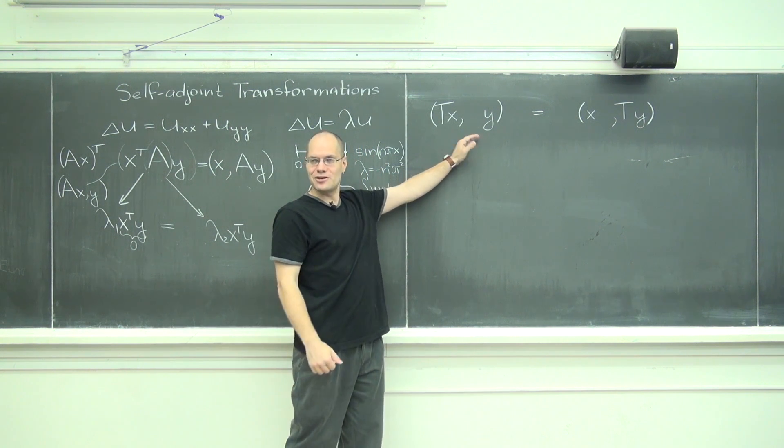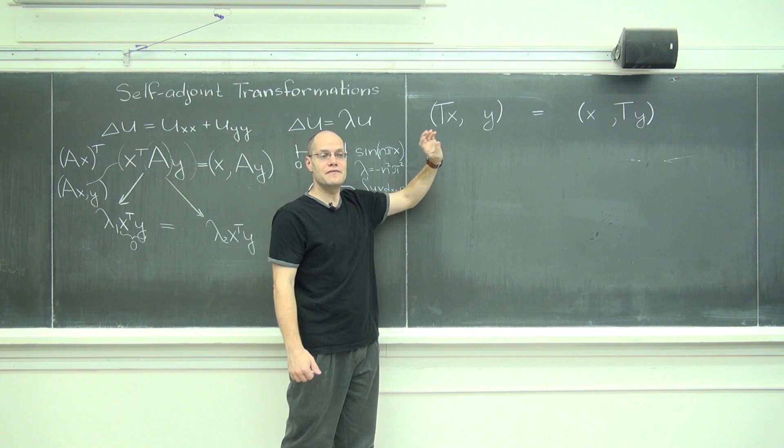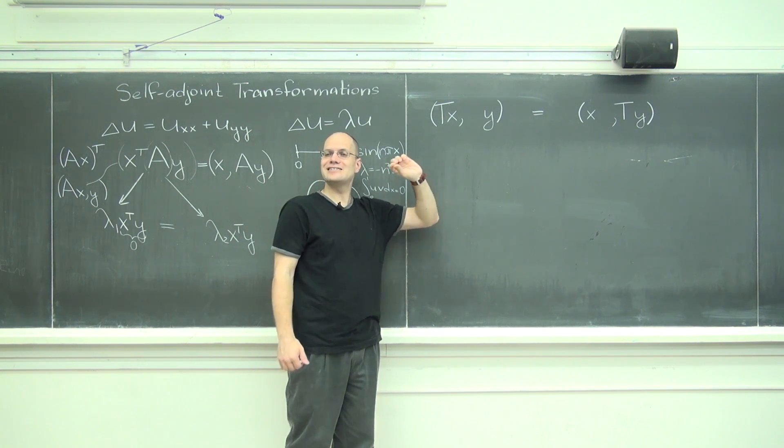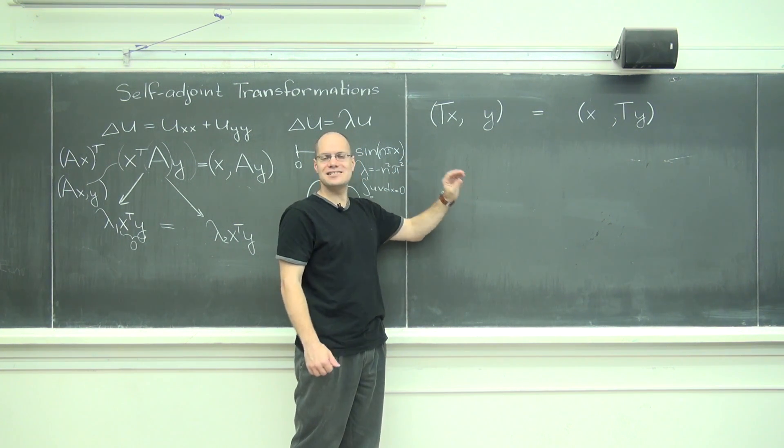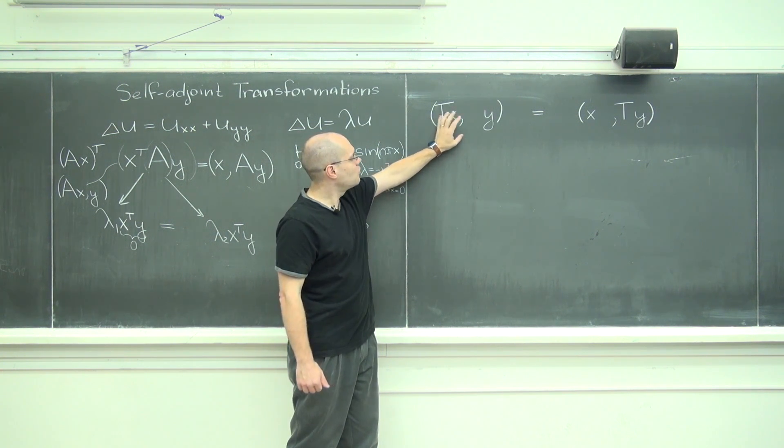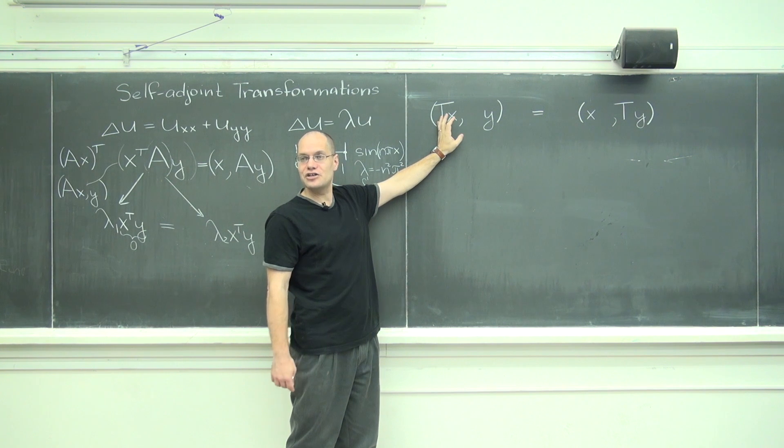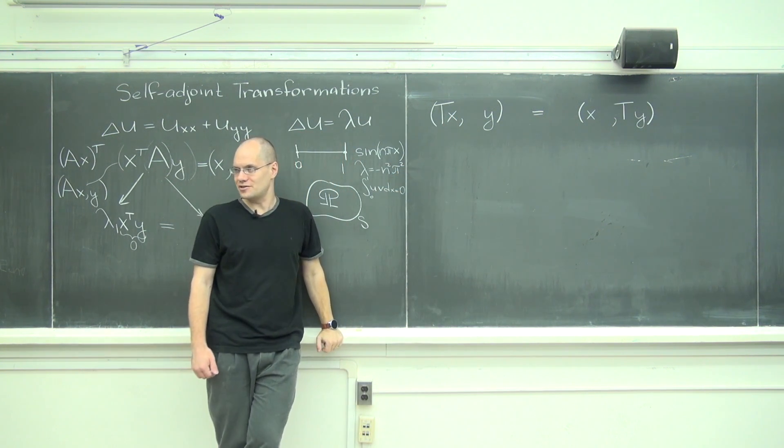I think the really interesting part is the self-adjoint transformations. Okay, so if the transformation is such that it doesn't matter which of the two vectors in a dot product, of an inner product, you apply it to, then the transformation is called self-adjoint.